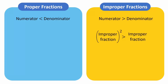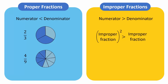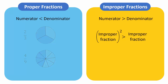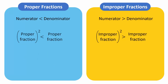But what about proper fractions? Let us look at the proper fraction 2 over 3, which is represented by this figure. The square of 2 over 3 is equal to 4 over 9. Surprisingly, the square 4 over 9 is less than the original fraction 2 over 3. Despite what we may think, the square of a proper fraction is always less than the proper fraction itself.